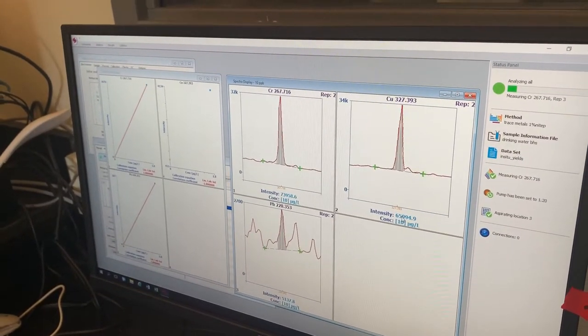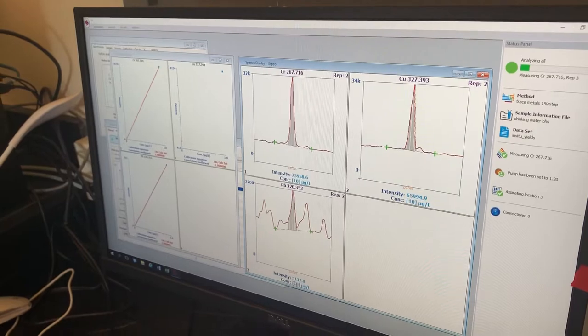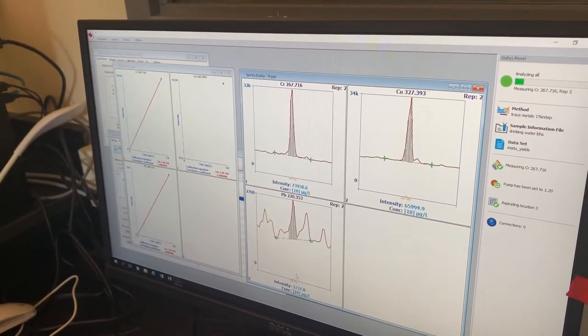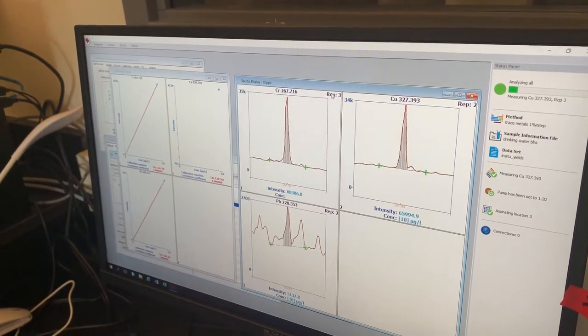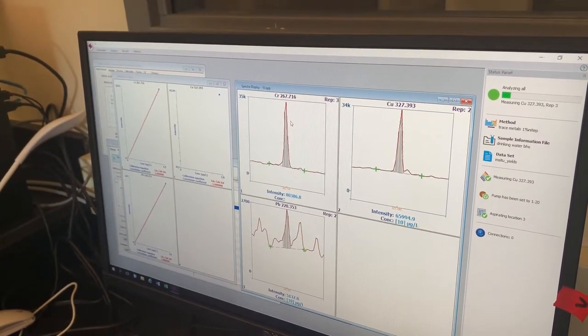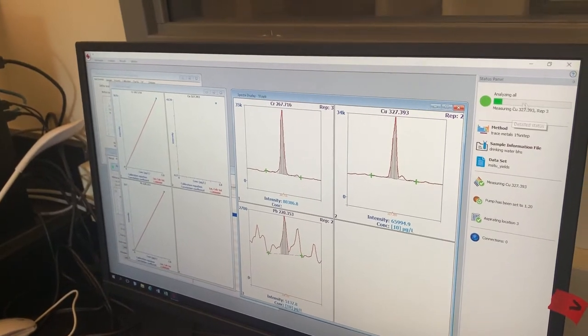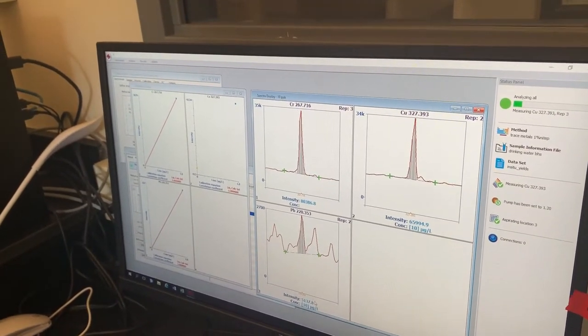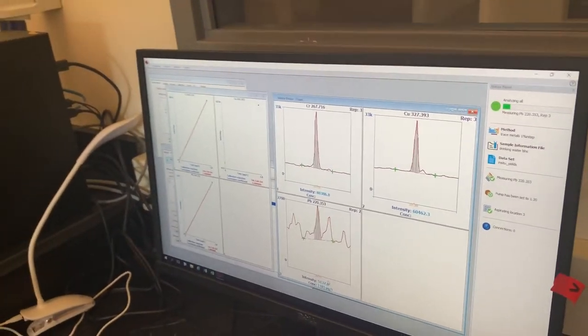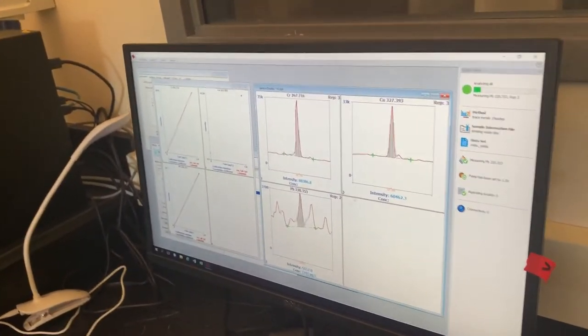And in the 10 ppb standard, we get an intensity of about 74,000 counts for this chromium peak. For copper, we get about 65,000 counts. And for lead, we get about 5,000 counts. And again, that's 10 ppb. We're making three replicate measurements of each on here. So we've done the third replicate for chrome. Right now, we're working on the third replicate for copper. And then we're going to do the third replicate for lead. So we always want to make repeat samples here in the machine. You can hear the machine going back and forth. It takes a couple minutes to do each one of these.